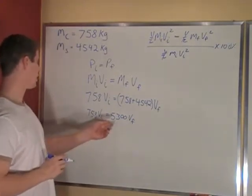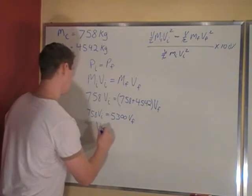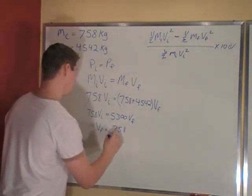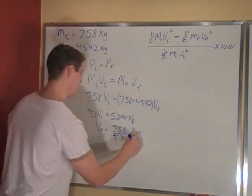So we can just solve for vf by dividing 5300 over. So we can say vf equals 758 over 5300 vi.